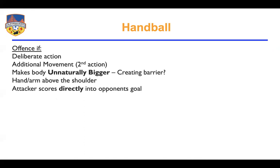If an attacker scores directly into the opponent's goal with their hand — notice it doesn't say deliberately — we don't want to see goals being scored from handball, even if it's accidental. So if somebody is just standing there and the ball hits them in the arm and it goes in the goal, we need to call that goal back. If the ball ever touches the arm of an attacker and goes in, we're going to want to call a handball, even if their hands were tucked into their body.